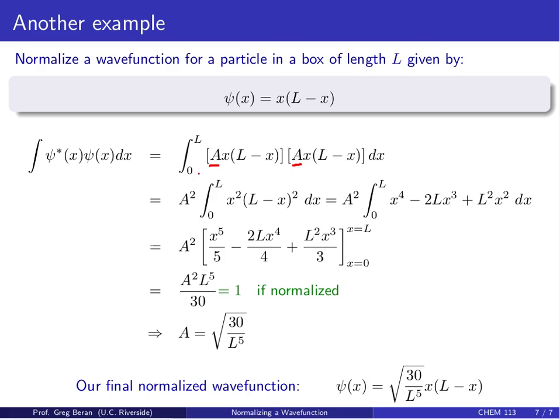Now we're going to carry out this integration. When I multiply those out, I get A² times the integral from 0 to L of x²(L - x)² dx. Multiply all that out, do the integral, evaluate the integral, and you end up with A²L⁵/30.